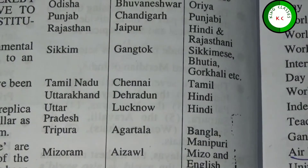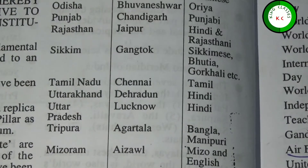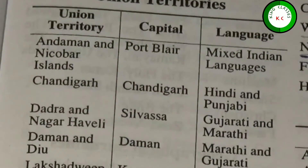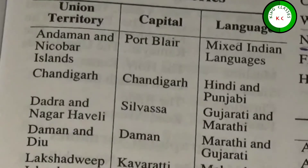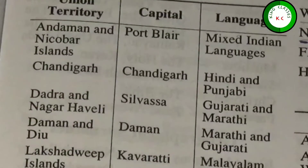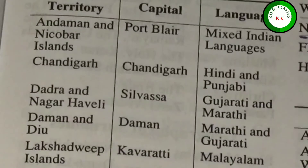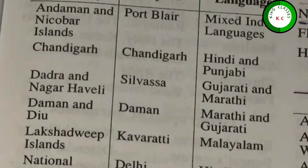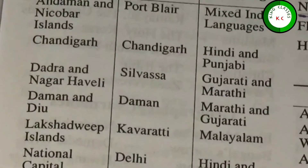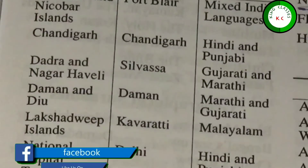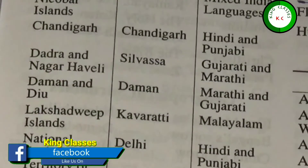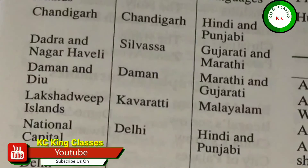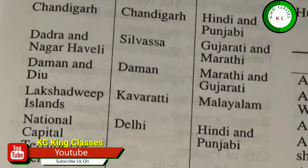Now we have our Union Territories. Andaman and Nicobar — capital Port Blair. Chandigarh — capital Chandigarh. Dadra and Nagar Haveli — capital Silvassa. Daman and Diu — capital Daman. Lakshadweep Islands — capital Kavaratti. National Capital Territory Delhi — capital Delhi. Puducherry — capital Pondicherry.